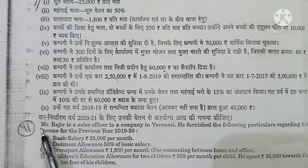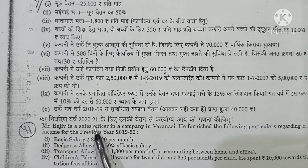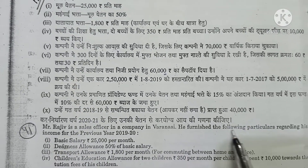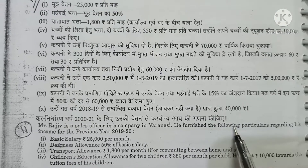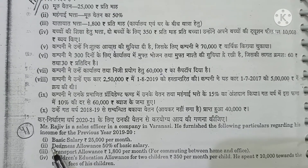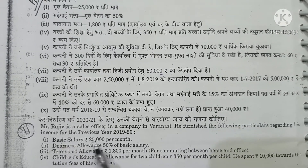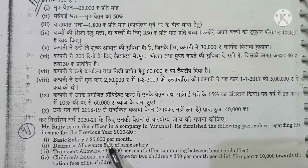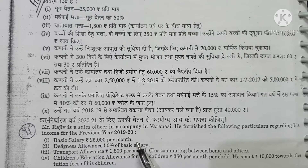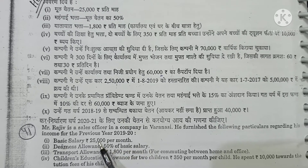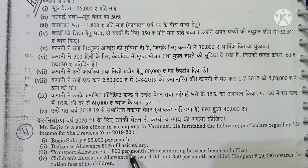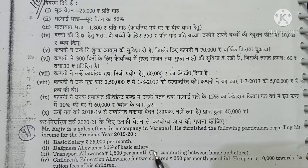Question No. 41. Mr. Rajiv is a sales officer in the company where we have a full salary calculation. Basic salary is $25,000 per month. Year-end allowance is 50% of basic salary.